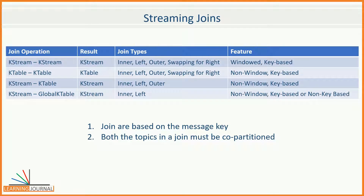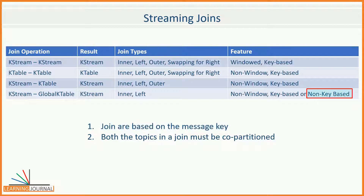Before we learn the mechanics of these join types, it is essential to list down some preconditions and limitations for joining two datasets in Kafka. Like any other system, joins in Kafka are performed over record keys. Hence, your KStream or KTable must have a valid key. If you do not have a key, or the key is null, you cannot perform a join. There is only one exception, and that is Global KTable. Non-key-based joins are allowed with KStream to Global KTable joins. All other joins are only key-based joins.